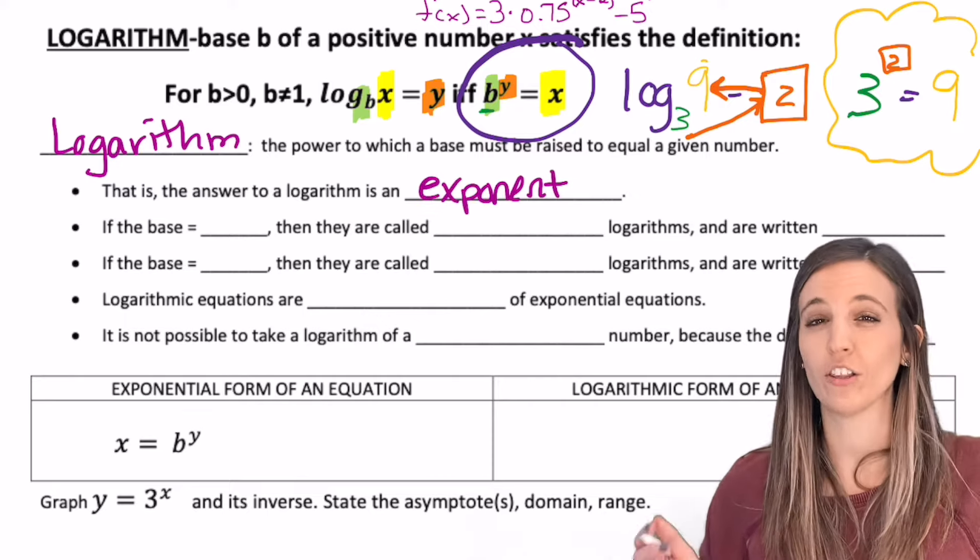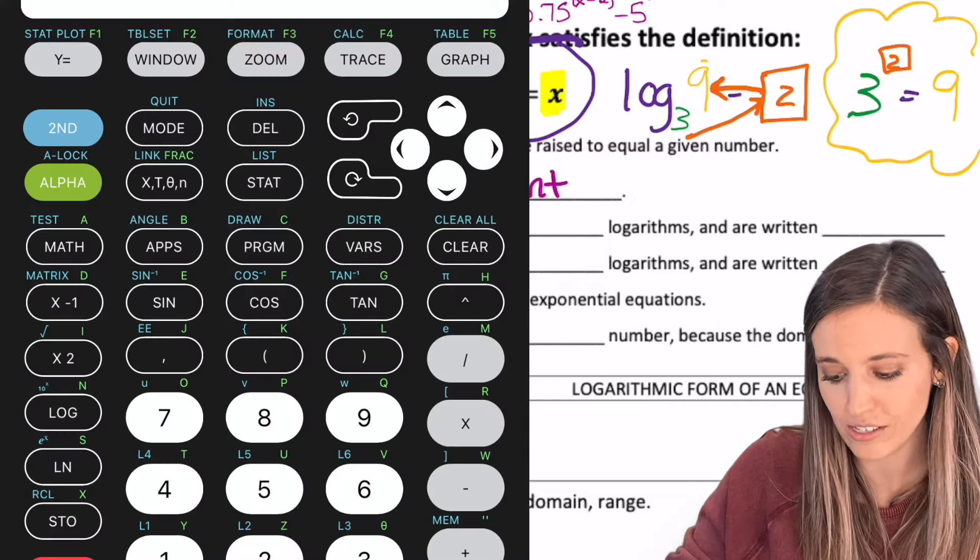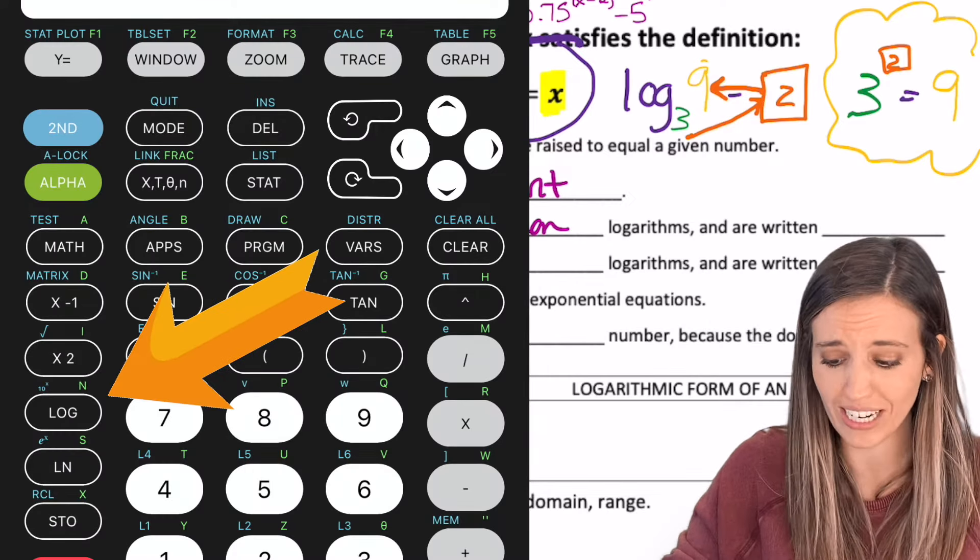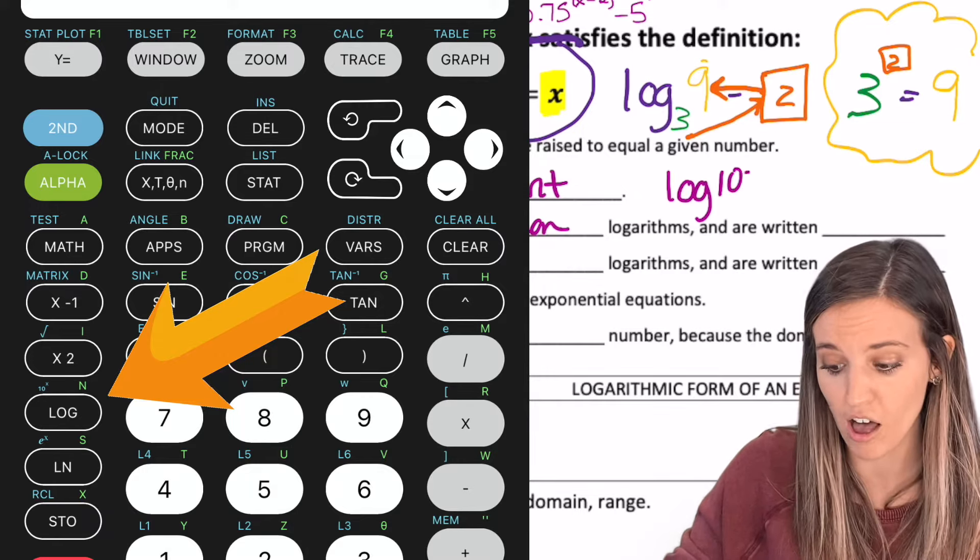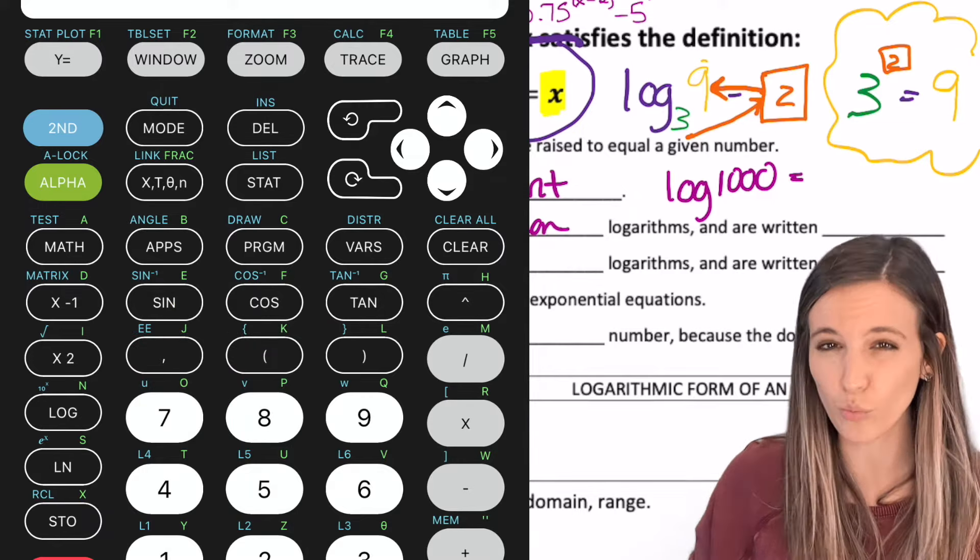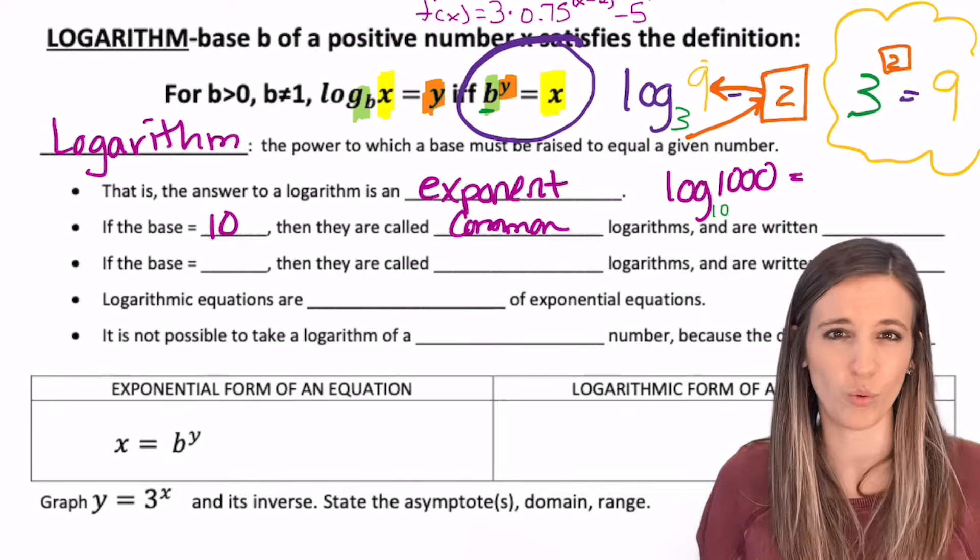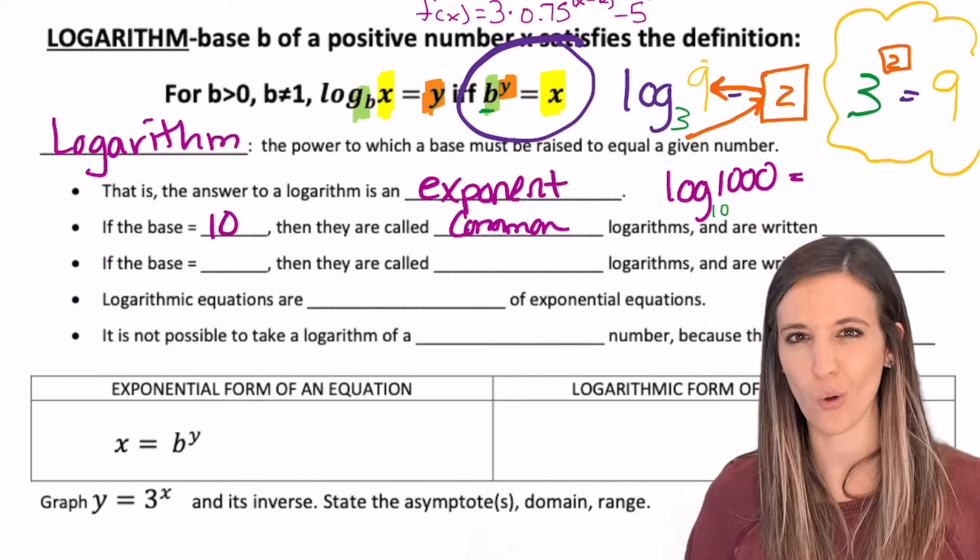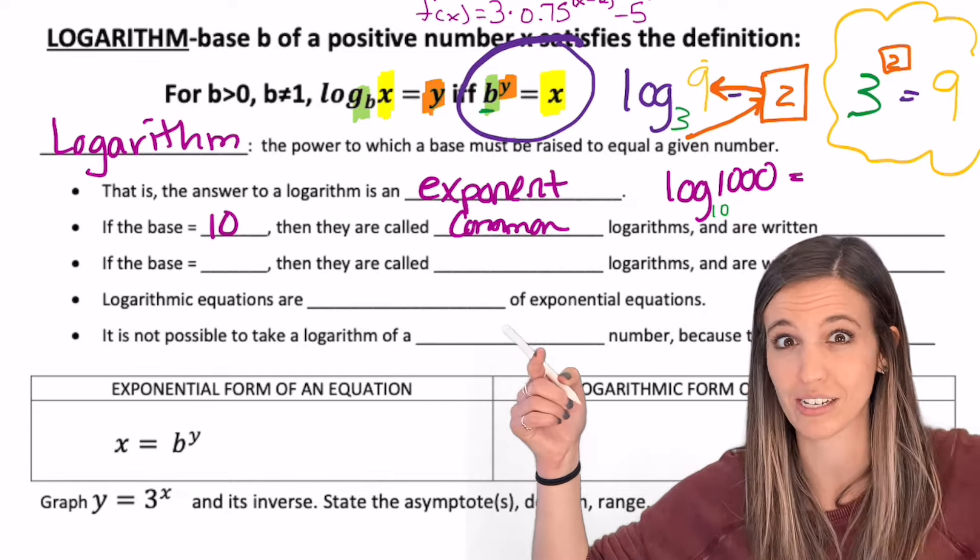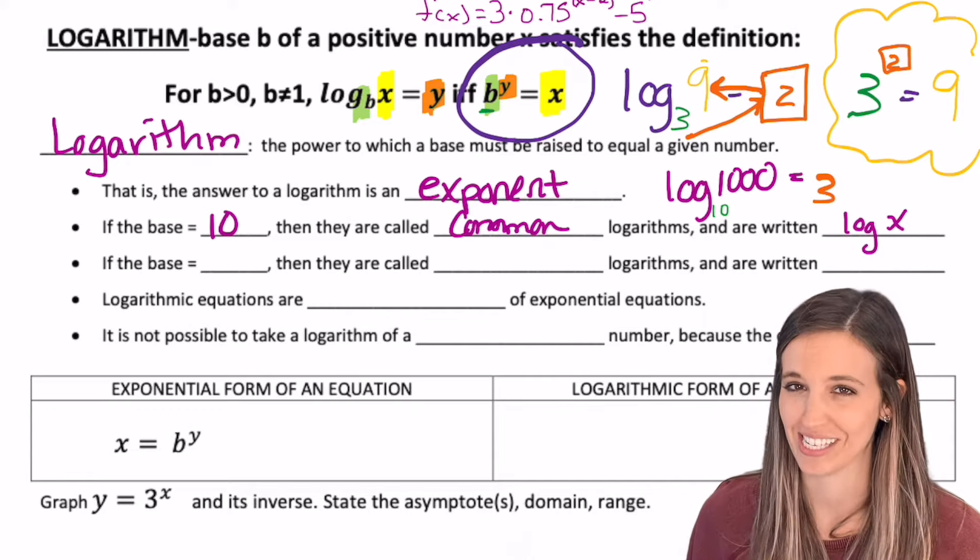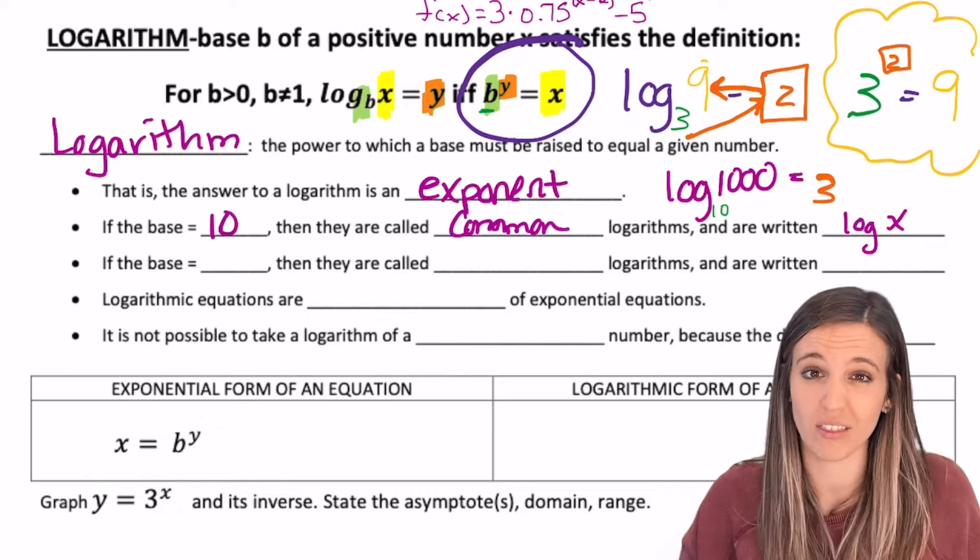So if a log has a base of 10, then we call that a common log. This is the log that our calculators knows. So anytime we don't see a base on a log, like if I see log of 1000, that's really just log base 10 of 1000. We just don't write the base. So what would the answer to log of 1000 be? 10 to what power is 1000? 3. So to emphasize a common log, we can just write as log x. We don't need to write the base.